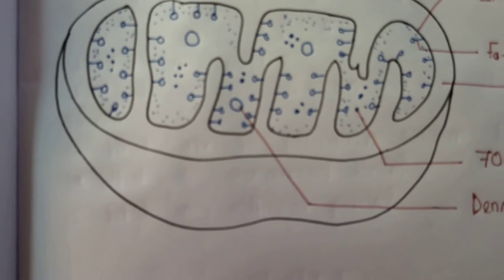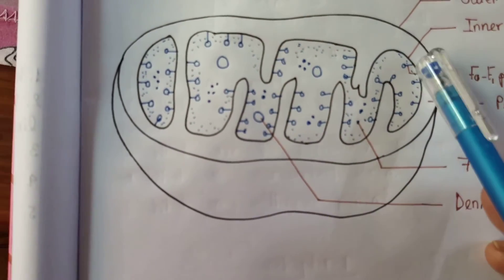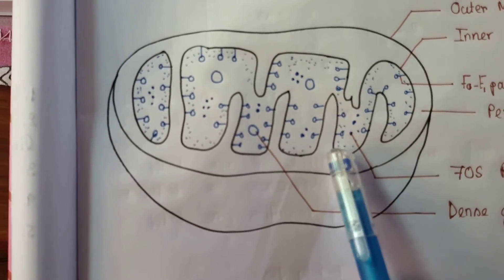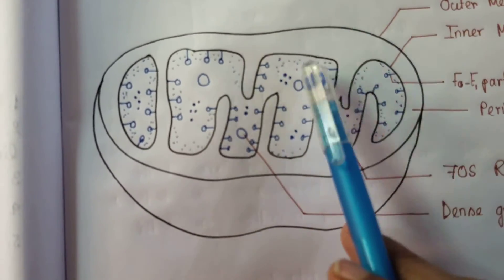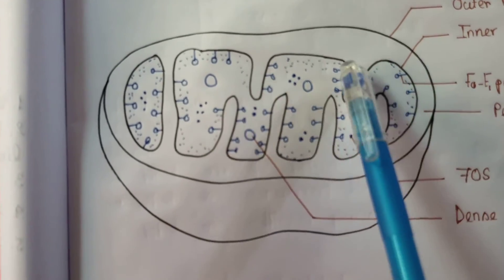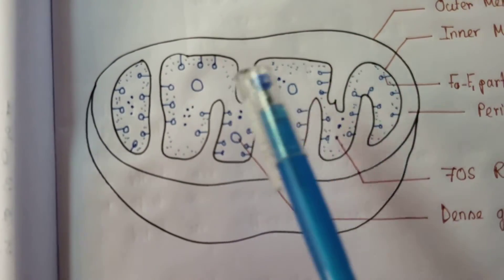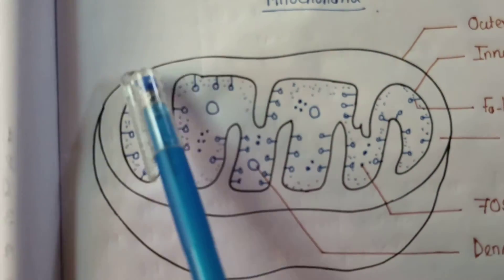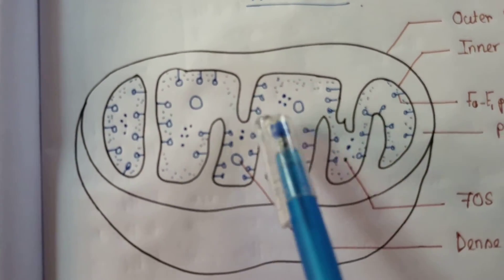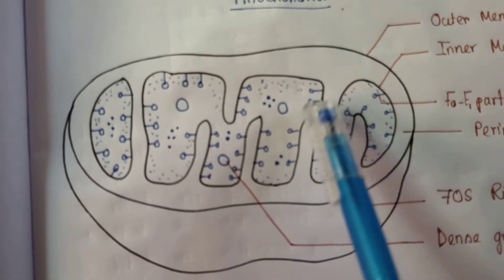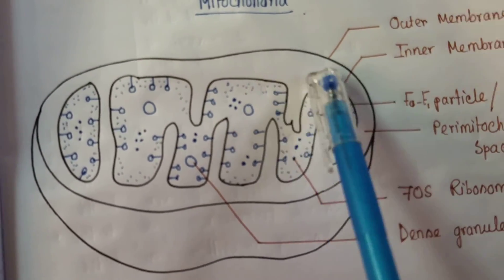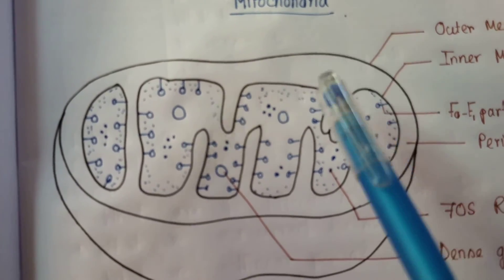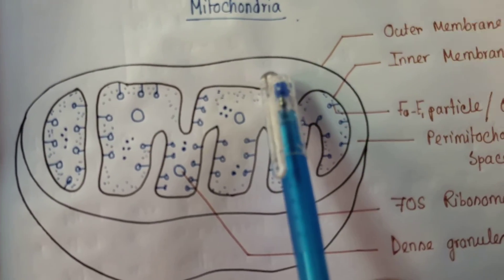The organelle has clearly two membranes: the outer membrane and the inner membrane. These two membranes divide the whole organelle into two different compartments - the outer compartment and the inner membrane compartment. The space that lies between the outer and inner membrane is called the peri-mitochondrial space.